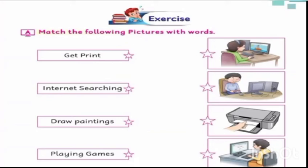Now we will do the exercise on page number 42. Part A is match the following pictures with words. You have all these pictures. See what's happening in these pictures. You have to match them with these words. We do get printing with printers. Get print. If we have to print, then we can take the print through printer.